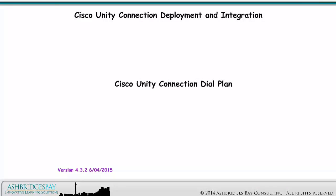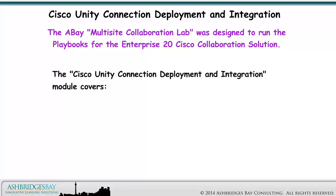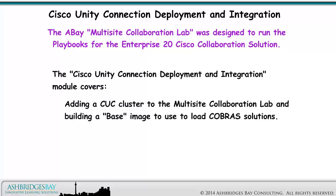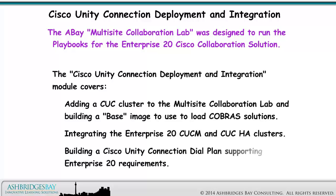In this Playbook, we add a Cisco Unity Connection Dial Plan that meets the Enterprise 20 requirements. The Abay Multi-Site Collaboration Lab was designed to run the Playbooks for the Enterprise 20 Cisco Collaboration Solution. The Cisco Unity Connection Deployment and Integration Module covers adding a CUC cluster to the Multi-Site Collaboration Lab and building a base image to load COBRA's solutions, integrating the Enterprise 20 CUCM and CUC clusters, and building a Cisco Unity Connection Dial Plan supporting Enterprise 20 requirements.